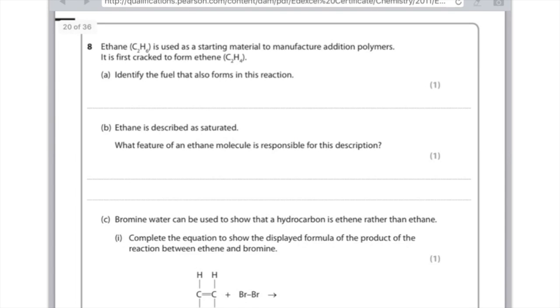Ethene is used as a starting material to manufacture addition polymers. It is first cracked to form ethene. Identify the fuel that also forms in this reaction. You need to look at what is left over here and it's going to be hydrogen, so that's H2. Don't allow the fact that it's a fuel to confuse you. Just look at the difference between the two molecular formulae.